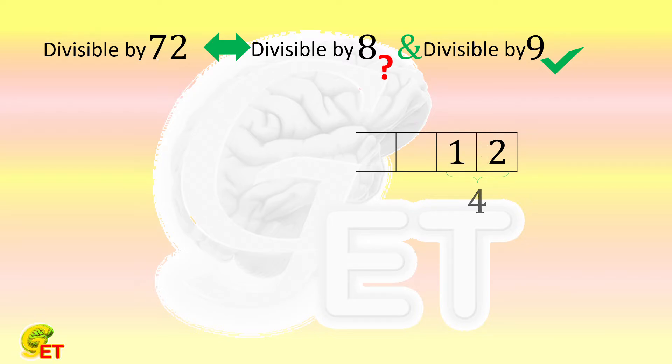Regarding being divisible by 8, we check the last three digits. For the same reason, it can only be 112. In this way, we guarantee that this number is also divisible by 8, so it must be divisible by 72.